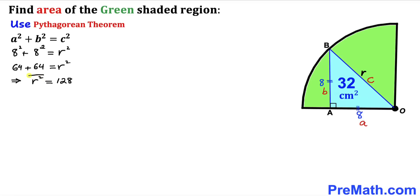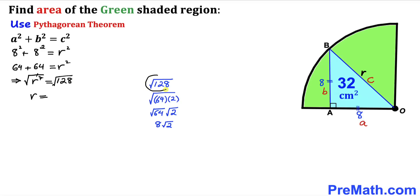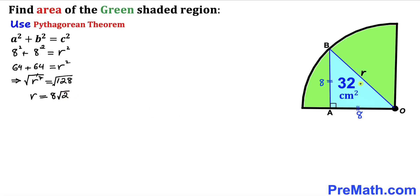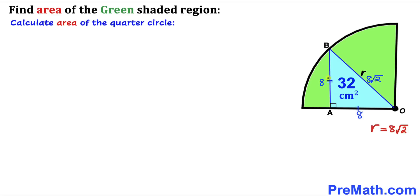So R² = 128. Taking the square root on both sides, the square and square root undo each other, and our radius R equals √128. Simplifying, this turns out to be 8√2. So our radius R is 8√2.